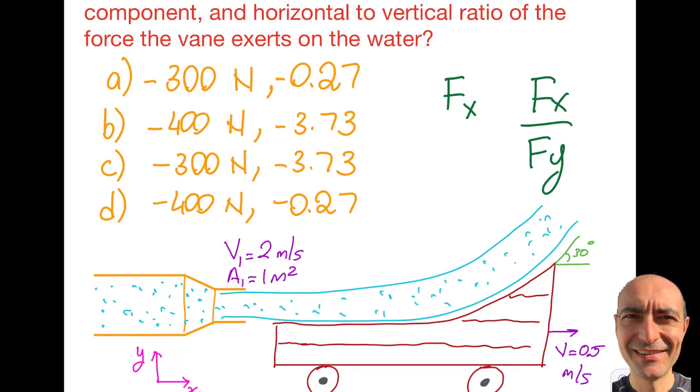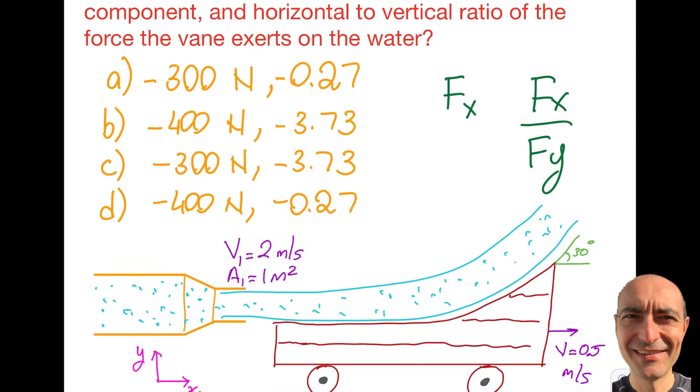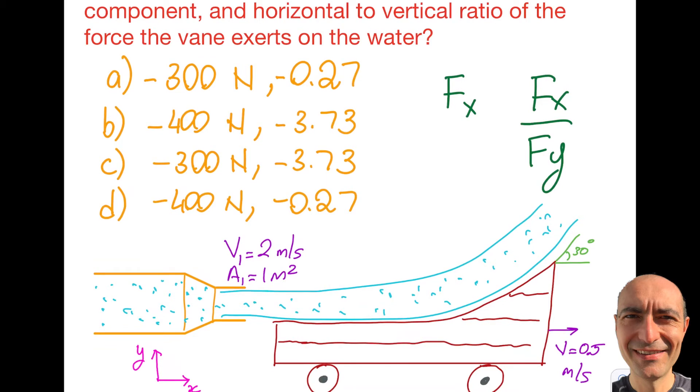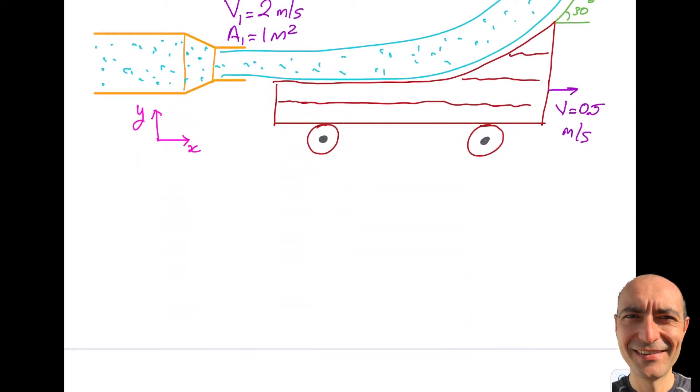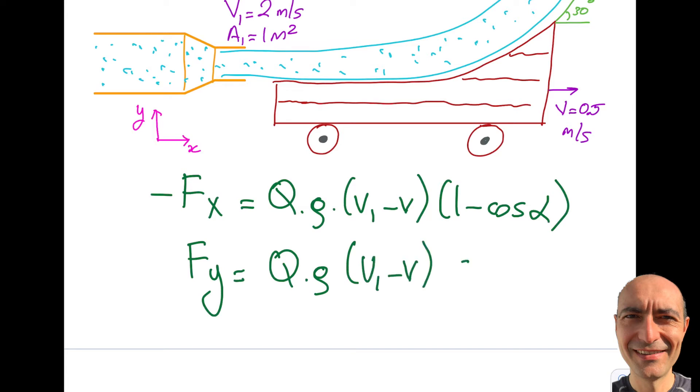How am I going to solve this question? The good thing is I have formulas in the FE reference manual - page 188, edition 10, called moving blade. I'm copying from the FE reference manual, but note there will be a trick. The formula is: Fx = -ρQ(V1-V)(1-cosα). Let me also write Fy because I'll need it: Fy = ρQ(V1-V)sinα.